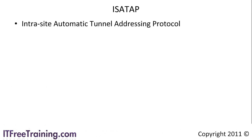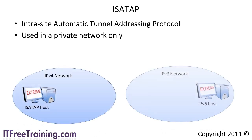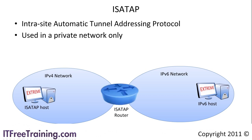ISATAP, or Intra-Site Automatic Tunnel Addressing Protocol, is enabled by default in Windows Server 2008. ISATAP is intended to be used in private networks only — it cannot be used on the internet. In your organization, if you have an IP version 4 network and an IP version 6 network and you want to communicate between those networks, notice there is no common protocol between the two. What you can do is install an ISATAP router between the networks. If a computer on the IP version 4 network wants to communicate with a computer on the IP version 6 network, the computer first communicates to the ISATAP router using IP version 4.